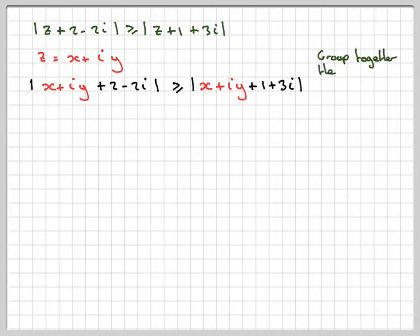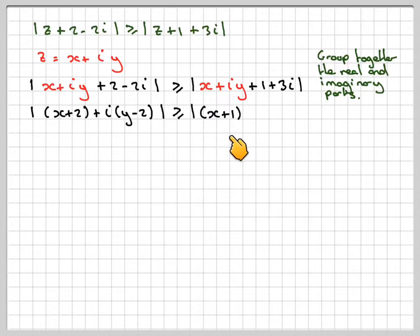Group together the real and imaginary bits. The real bit from this is x + 2, so we've got |x + 2 + i(y - 2)|. It's greater or equal to the real bit here, x + 1, so |(x + 1) + i(y + 3)|. Then use the idea that the modulus is the square root of x² + y². Again, use the squared version, it's probably better.